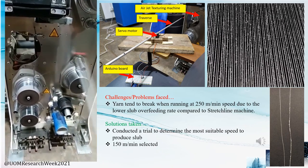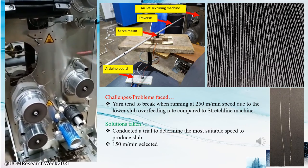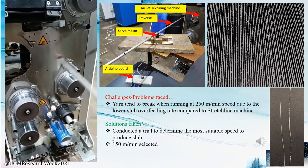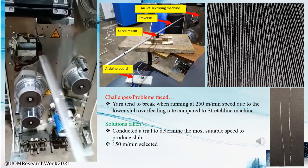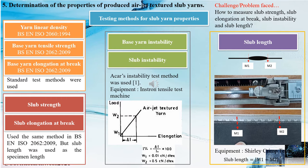Here you can see the air jet texturing machine with the developed slab unit. When using that slab unit, the yarn tended to break at 250 meters per minute due to a lower slab overfeed rate. So we conducted a few trials and determined that 150 meters per minute is the optimum value for the experiment. Loop instability is a very critical parameter to measure as it can affect the speed of knitting during the knitting stage.